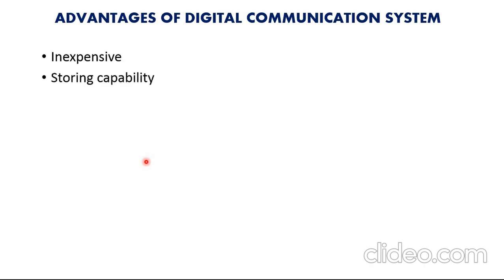Number two: storing capability. Digital signals can be easily stored compared to analog signals. Digital devices like smartphones and computers allow people to store large amounts of data. Storing capability is very high in digital communication systems.